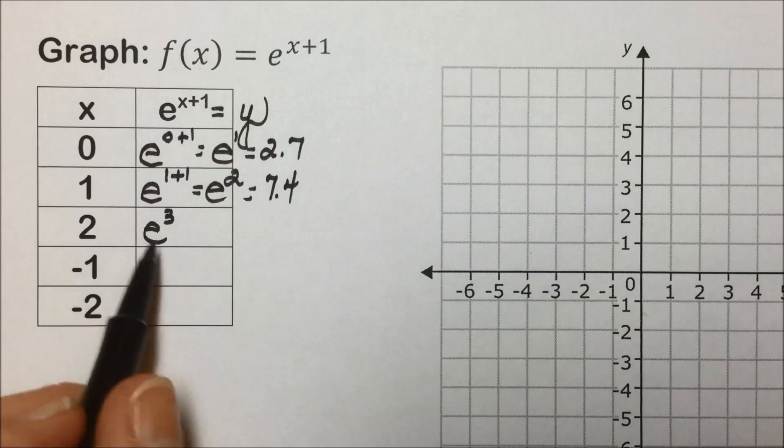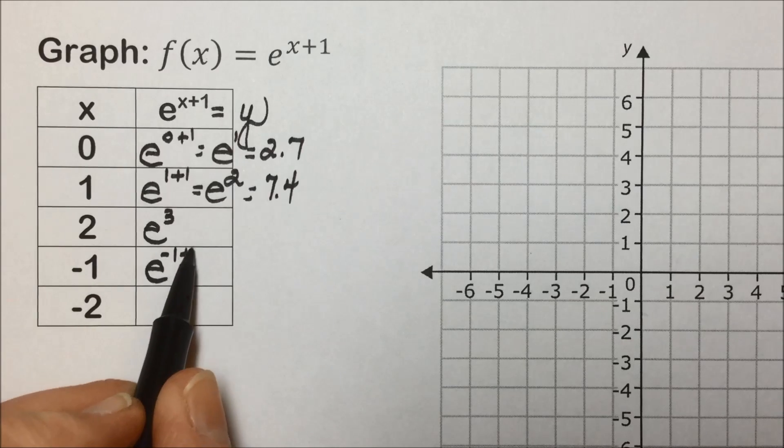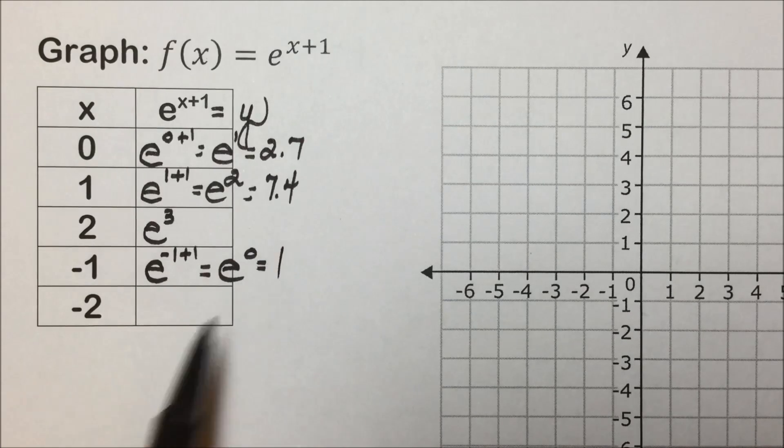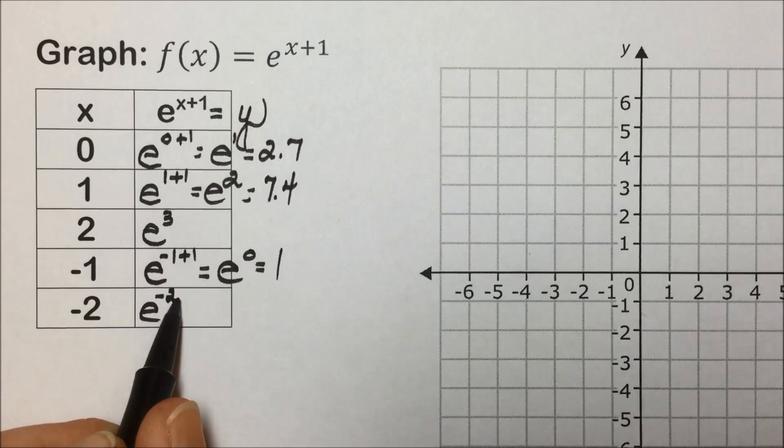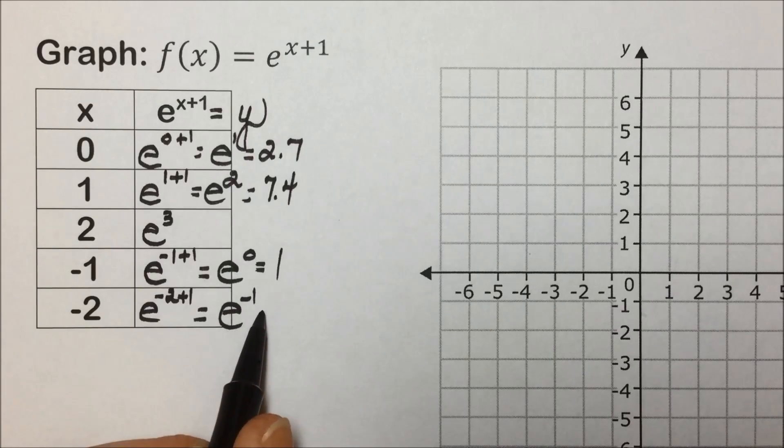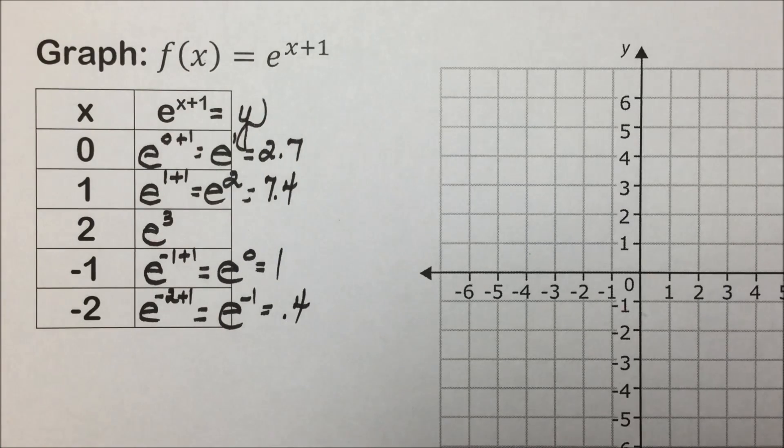What happens with negative values? When x is negative 1 plus the 1 that's already there gives us e to the 0, anything to the 0 power is equal to 1. With negative 2 in place of x plus the 1, we end up with e to the negative 1. This would be 1 over 2.7, which has an approximate value of 0.4.